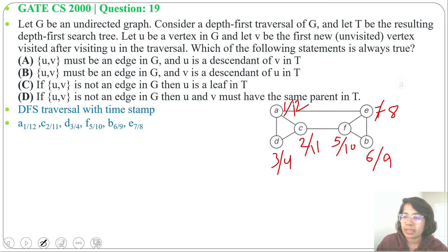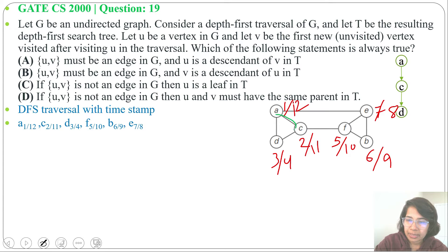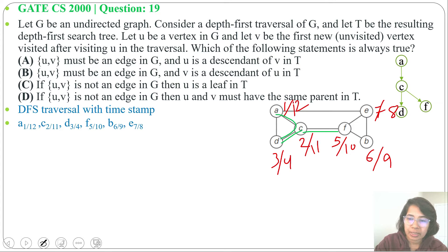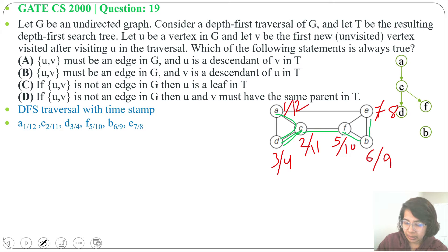If we create the DFS tree, the root will be A since we start visiting from A. After A we visit C, then from C we visit D. Then D backtracks to C, and from C we visit F — so F is a child of C. After D we are visiting F, but not directly; we are backtracking to C and then visiting F from C. Then from F we visit B, and from B we visit E.